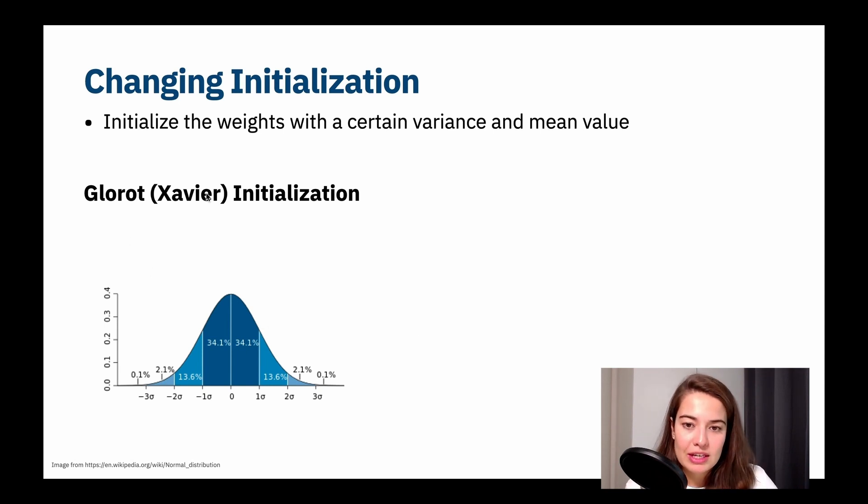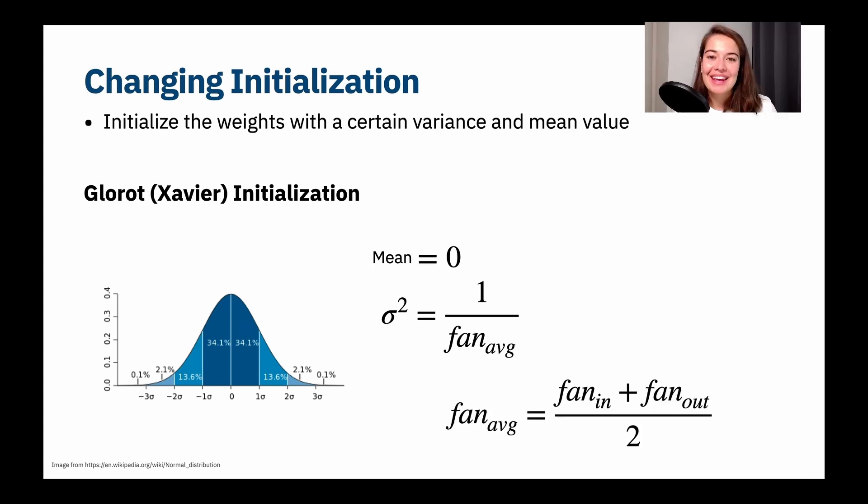For Glorot initialization, what they tell us is that we need to keep the mean at zero when we're initializing the weights. If you remember, we initialize them randomly, but they're saying the mean should be zero and the variance needs to be one divided by the average fan. That is the number of inputs plus the number of neurons that we have, which is the same as the number of outputs we're going to give, divided by two. So it's basically the average number of these two.